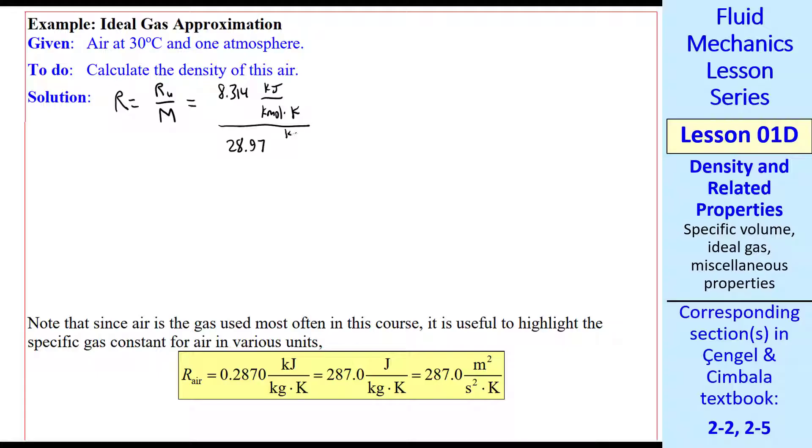You can look this up on the equation sheet for students in my class. 28.97 kilogram per kilomole. Always write your units. Kilomoles cancel out. We get 0.286986 kilojoule per kilogram K. Now we apply the ideal gas equation, solving for density. Density is p over RT.